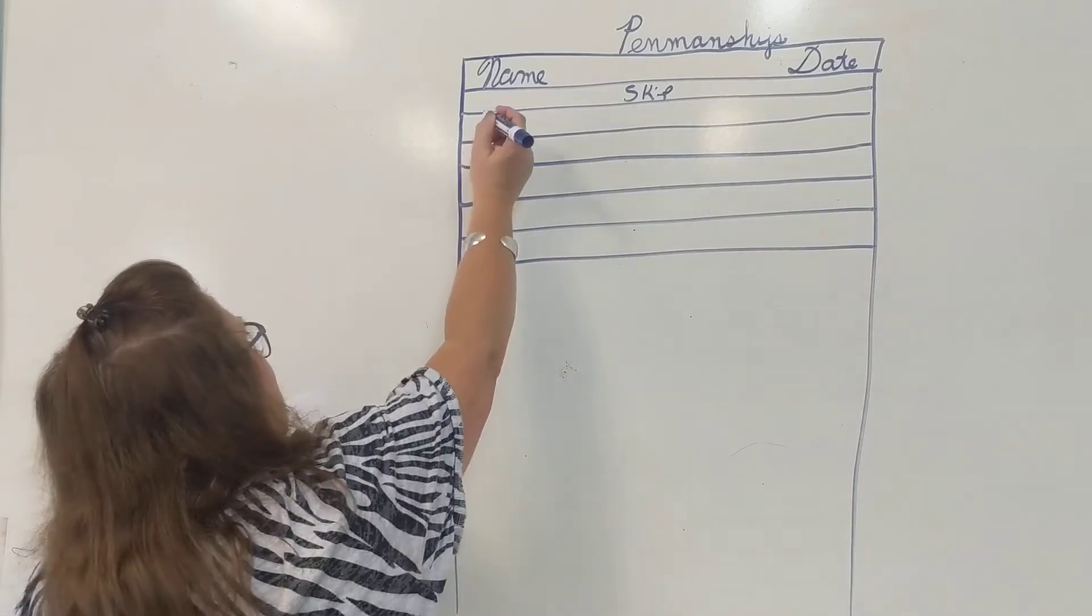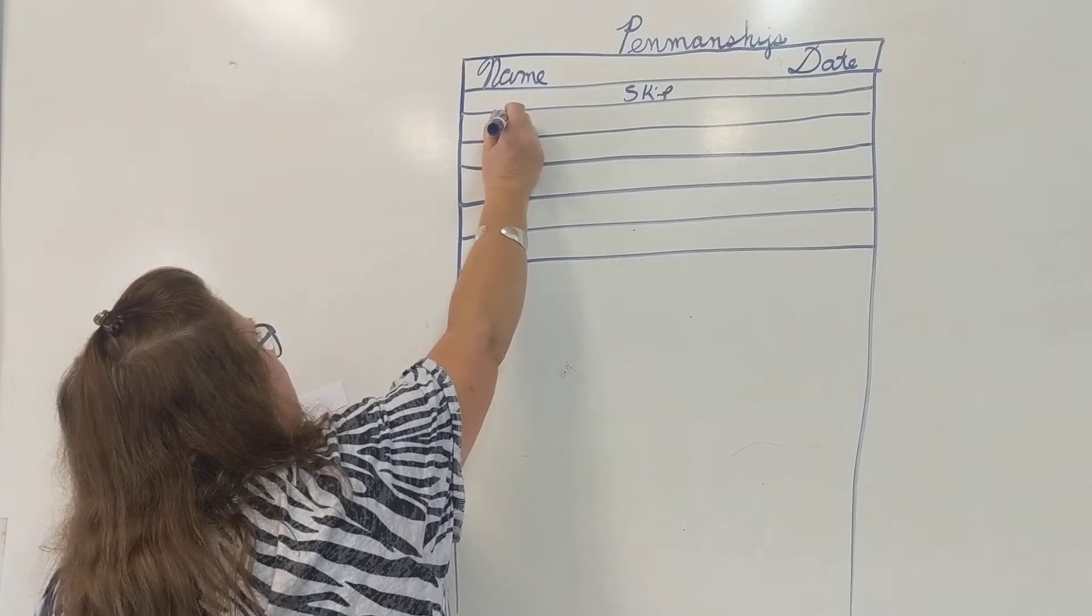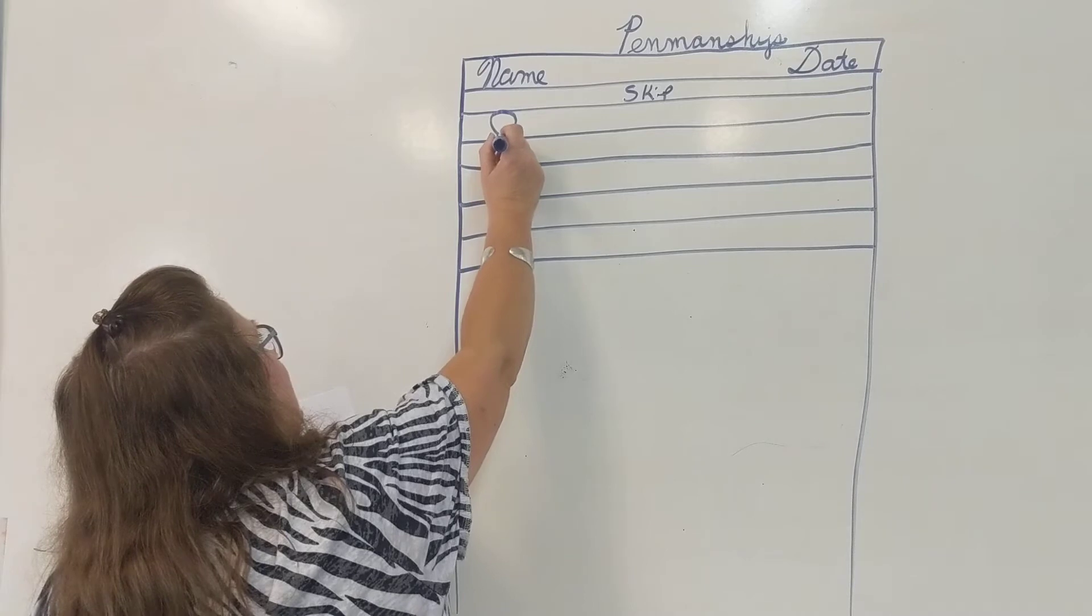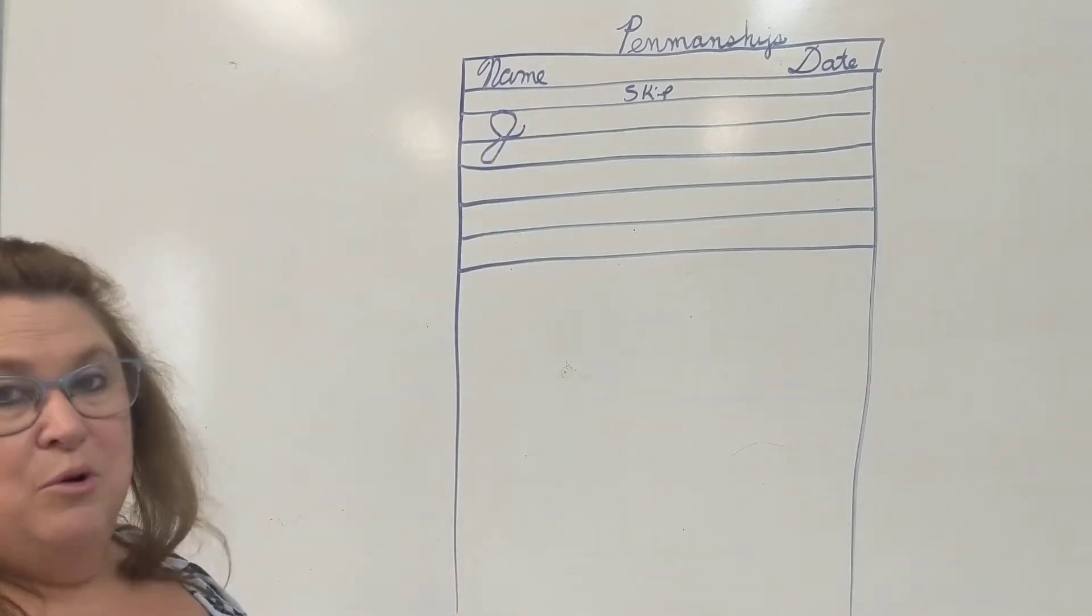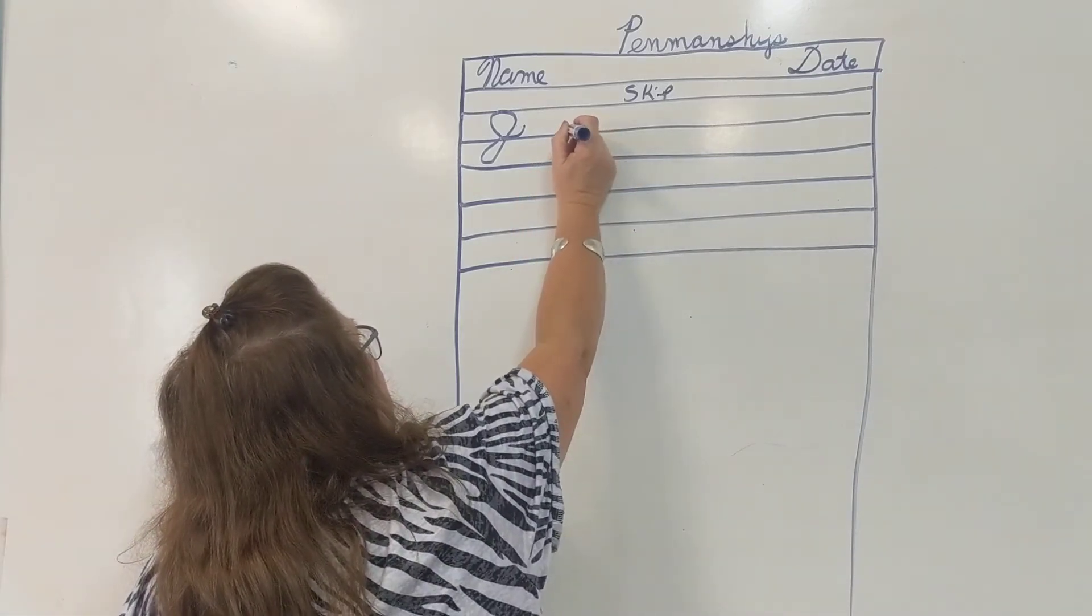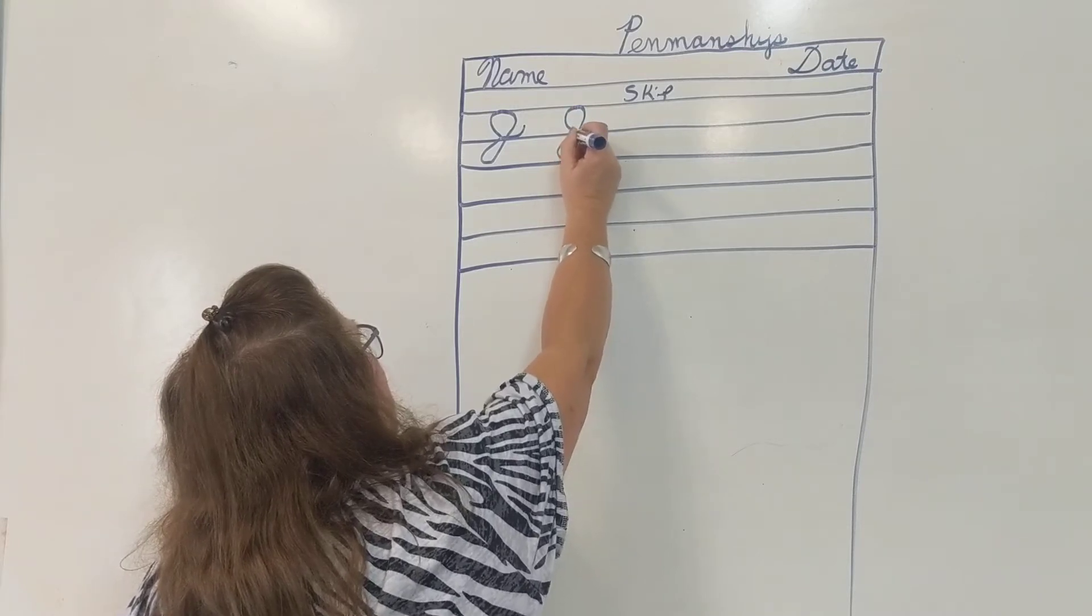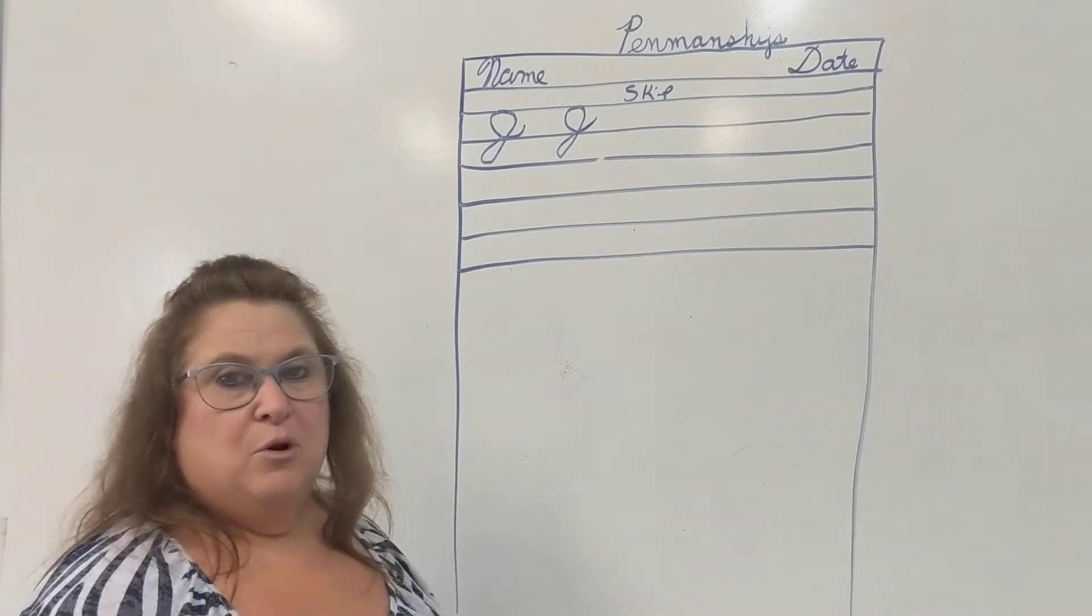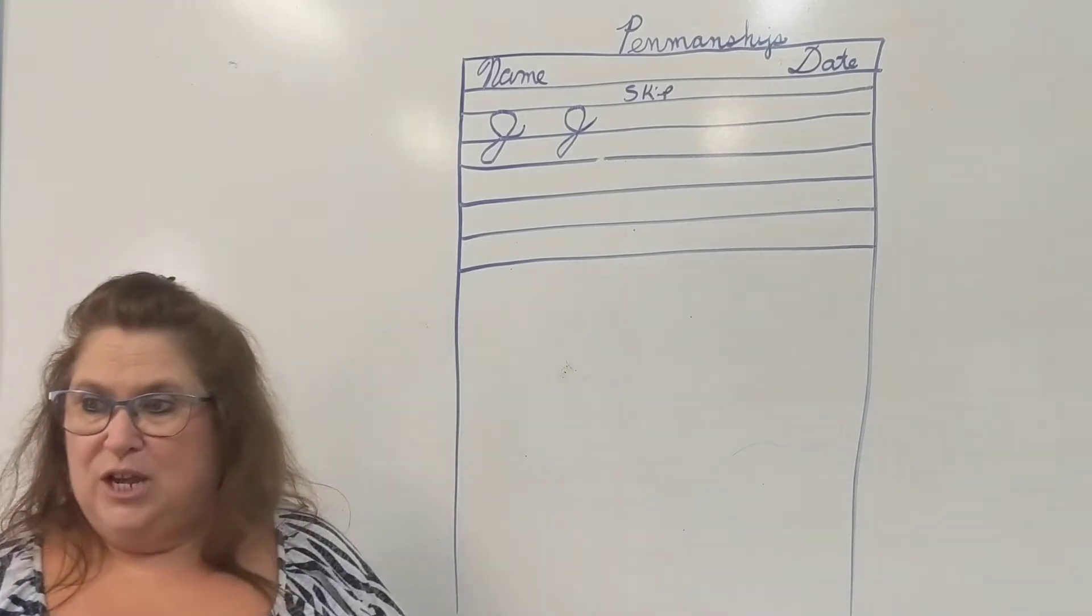So our J starts on the bottom line. We're going to curve out and up and around to the top, curve around and down to the next line, curve back around and sling up with a smile. And that is our capital J. Watch again. We're on the bottom line. We're swinging up and around and curving down and swinging back up, crossing at the line, and swinging up with our smile. That is our capital J. You may write me five capital J's, please.